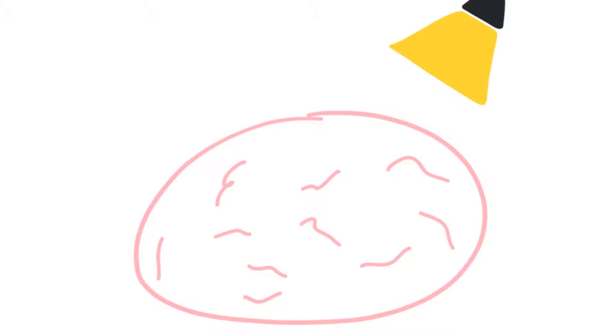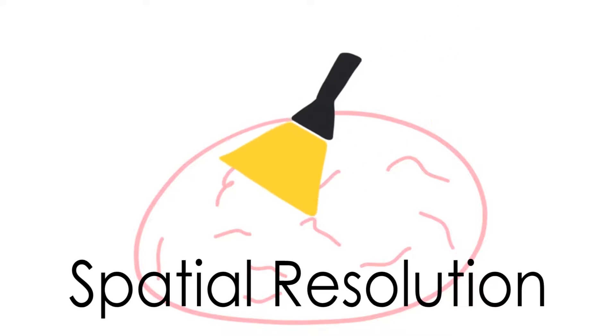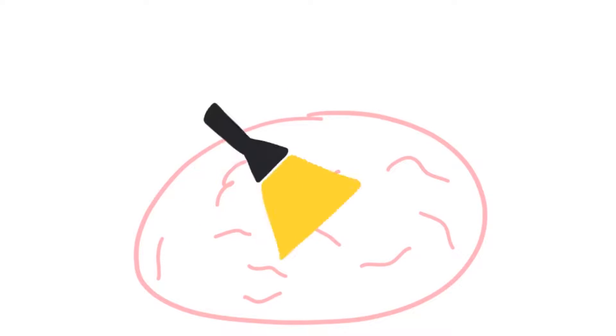Optogenetics offers two advantages over current brain research methods. First of all, it has high spatial resolution, which means scientists can pinpoint exactly which areas of the brain they want to activate.